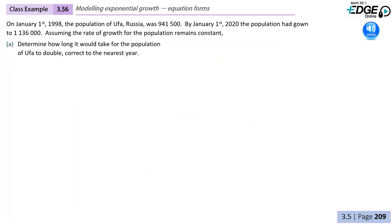Class example 3.56. On January 1st, 1998, the population of Ufa, Russia was 941,500. By January 1st, 2020, the population had grown to 1,136,000. Assuming the rate of growth for the population remains constant, determine how long it would take the population of Ufa to double, correct to the nearest year.